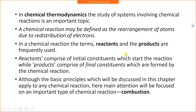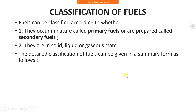Reactants comprise the initial constituents which start the reaction, while products comprise the final constituents formed by the chemical reaction. For carbon dioxide, carbon and oxygen are the initial constituents (reactants) and carbon dioxide is the product. The basic principles discussed in this chapter apply to any chemical reaction, but main attention will be focused on the important type of chemical reaction — combustion.